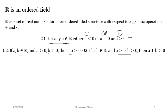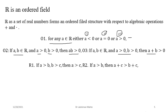With only these three order properties O1, O2, O3 given, we have to establish further results. The first result to establish is transitivity: if a > b and b > c, then a > c. Another result: if a > b, then a + c > b + c for any real number c — here no condition is placed on whether c is positive or negative.